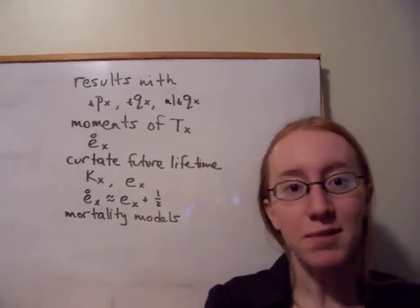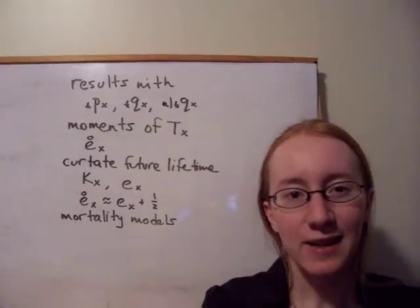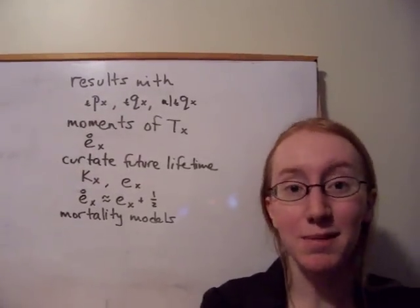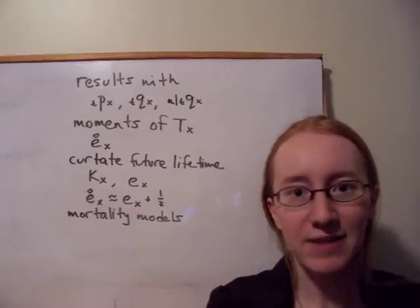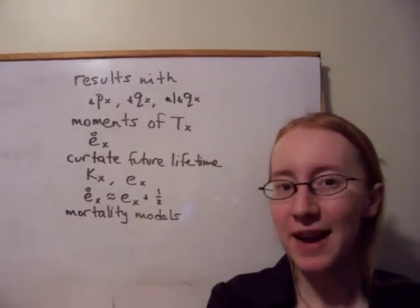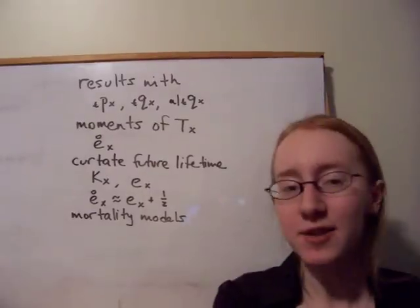We can then calculate moments of the future lifetime random variable TX. The first moment, obviously the one that's most important to us, would be the mean future lifetime, or the average future lifetime, or the expected future lifetime of a life that's currently age X. We call that E circle X.